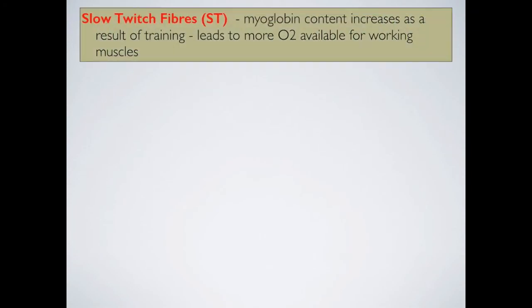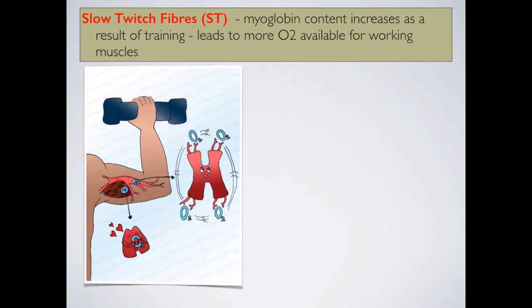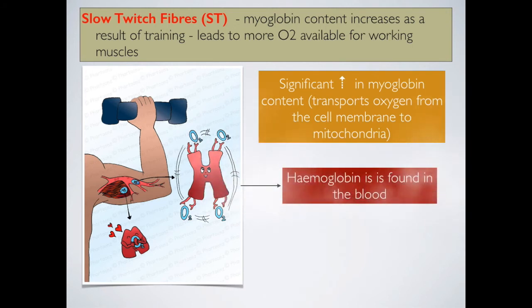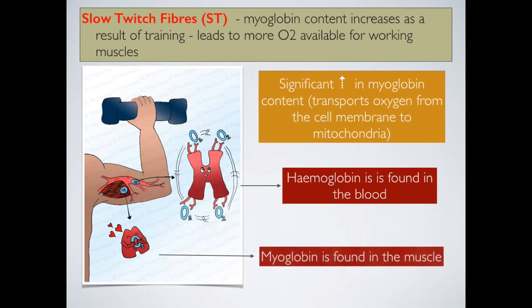Slow-twitch fibres also contain more myoglobin, which, similar to haemoglobin but found in the muscles, delivers oxygen to the working muscle. With training, this myoglobin increases, as does haemoglobin.